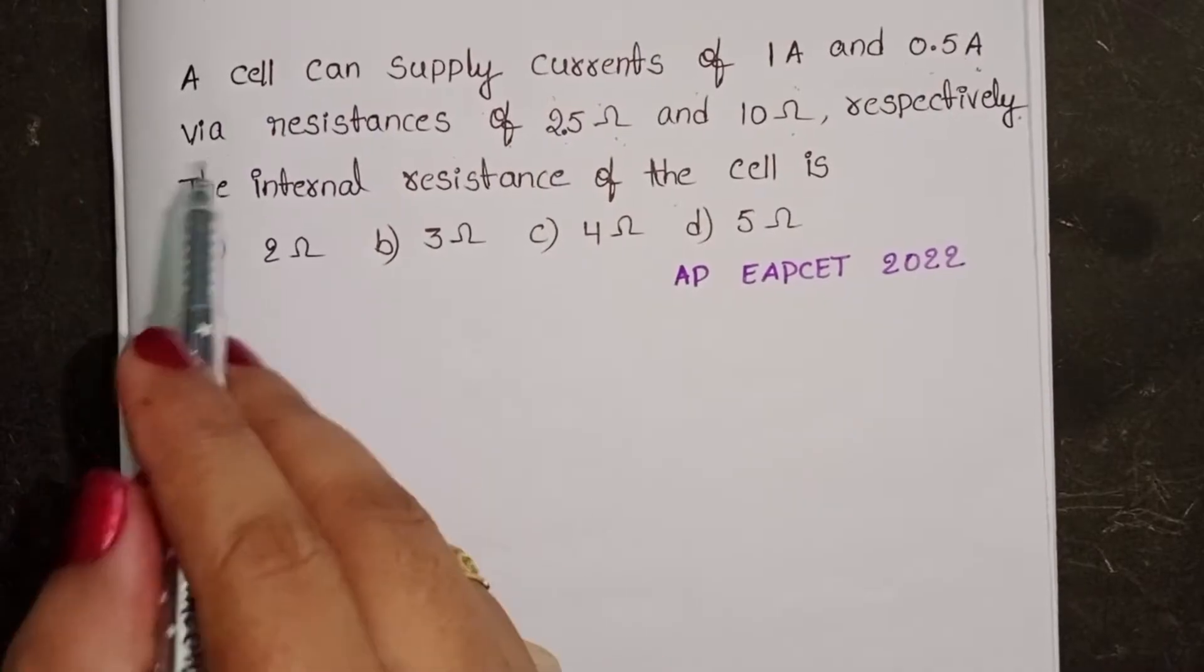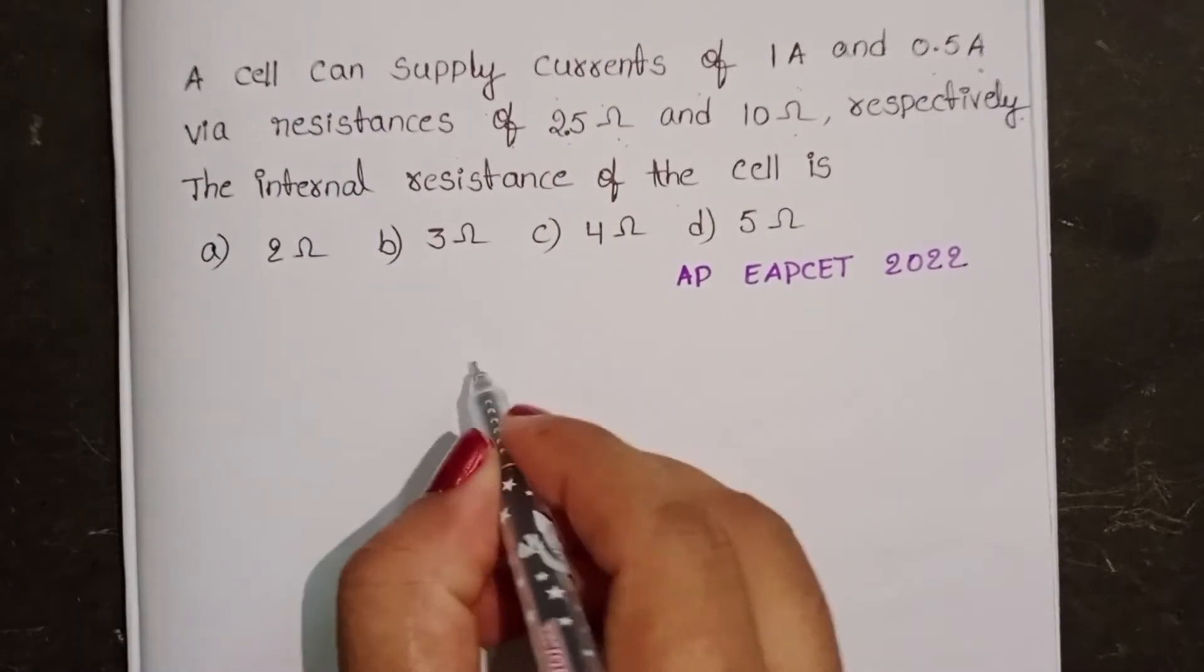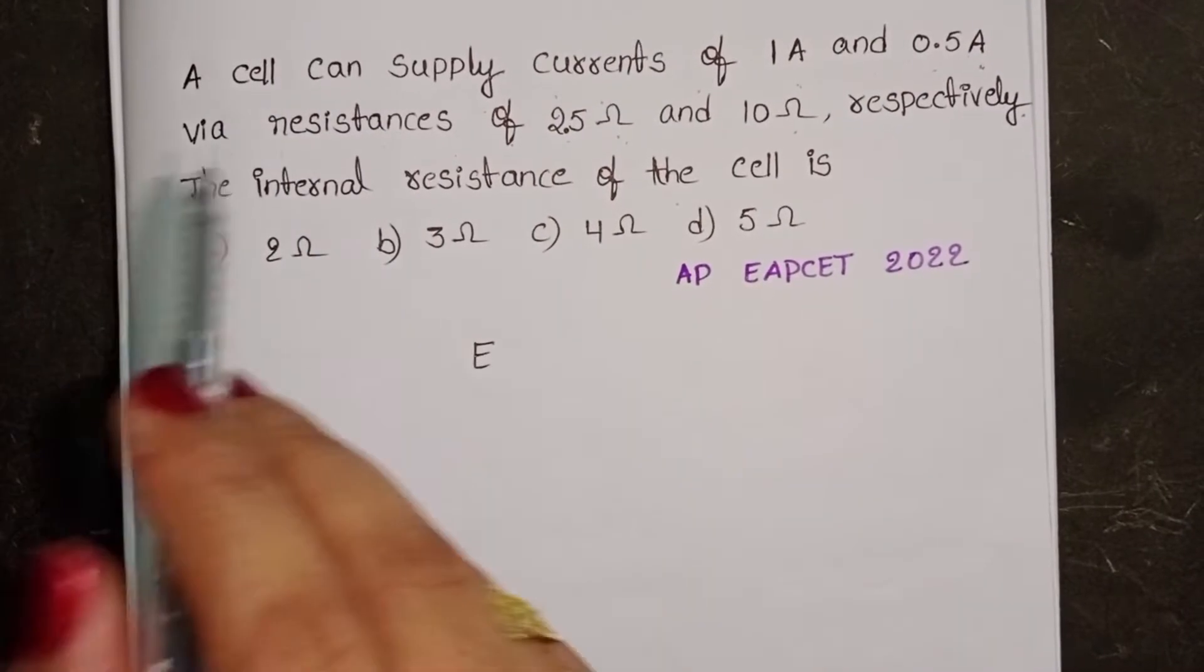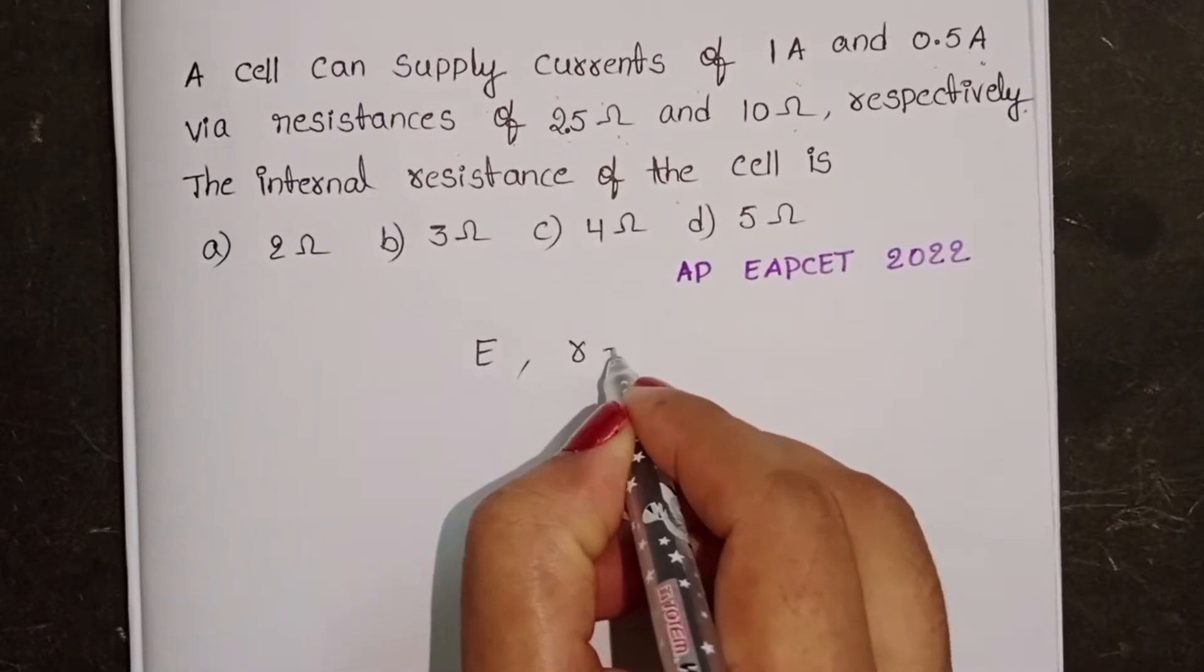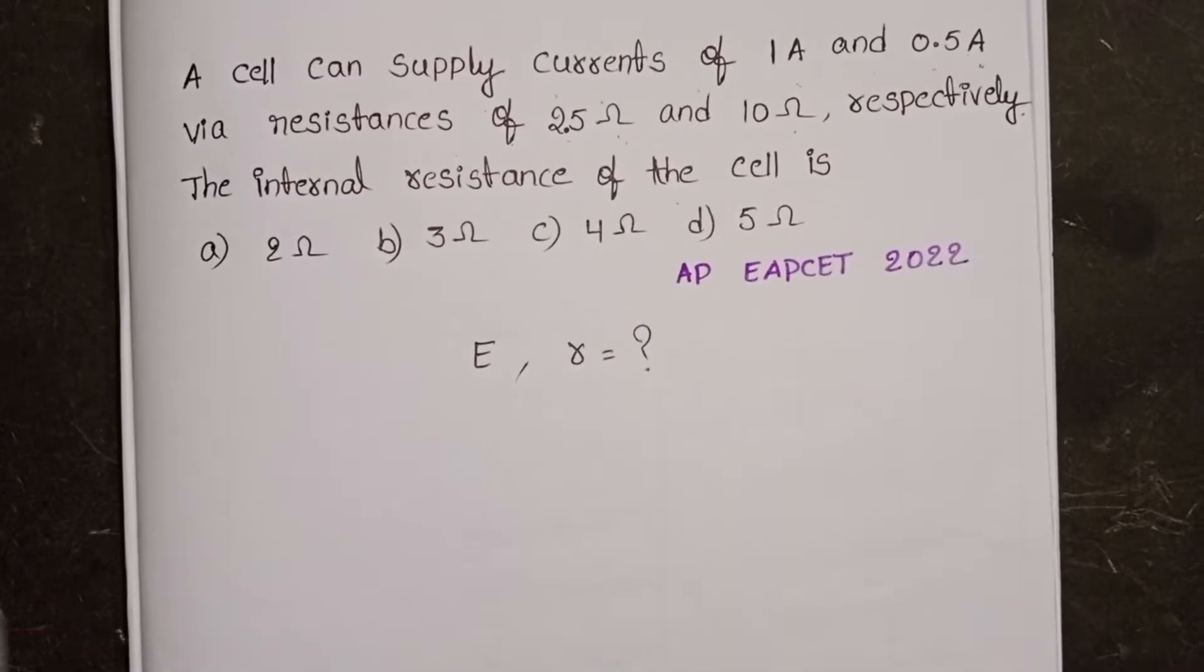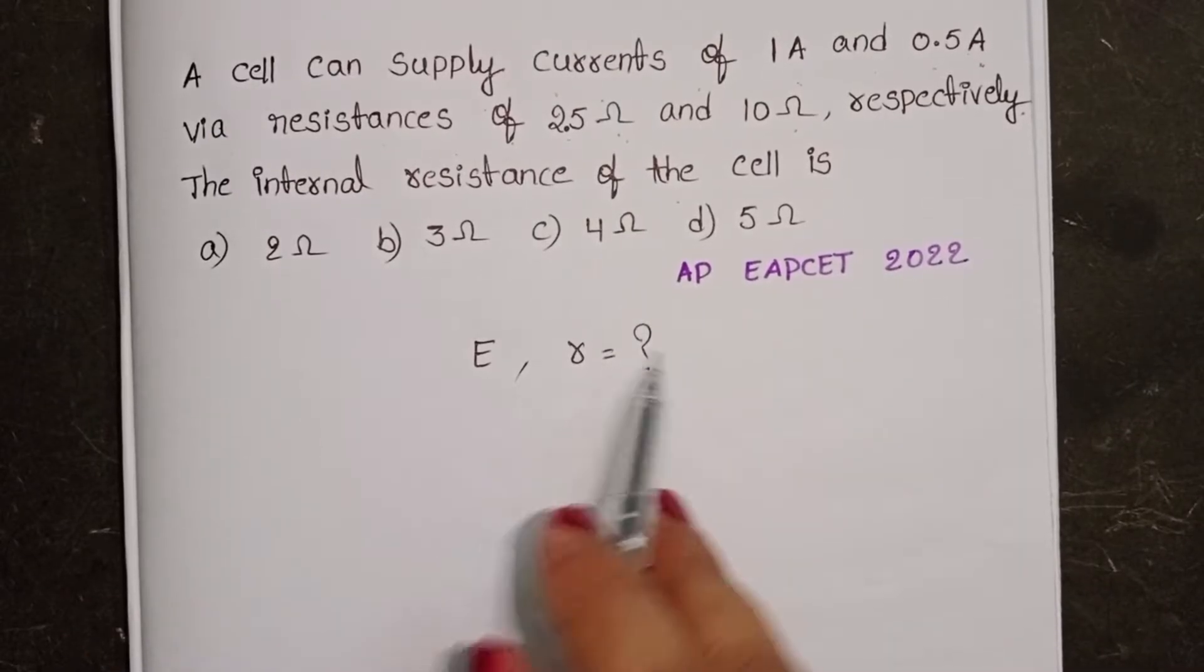In the given problem, we don't know the EMF of the cell. Let it be E. And also we don't know the internal resistance of the cell. Let it be R. In the given question, we have to find out the internal resistance of the cell.